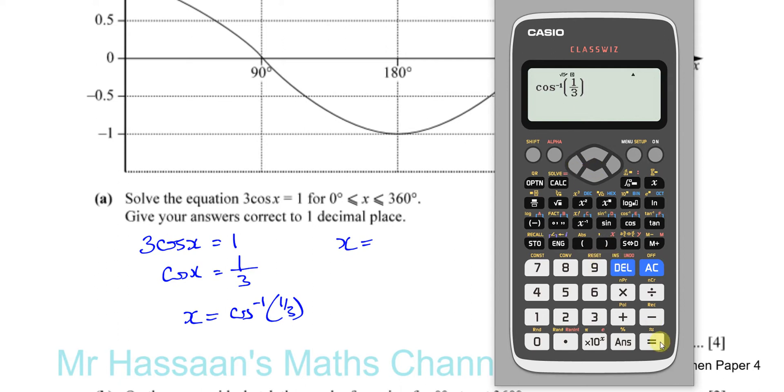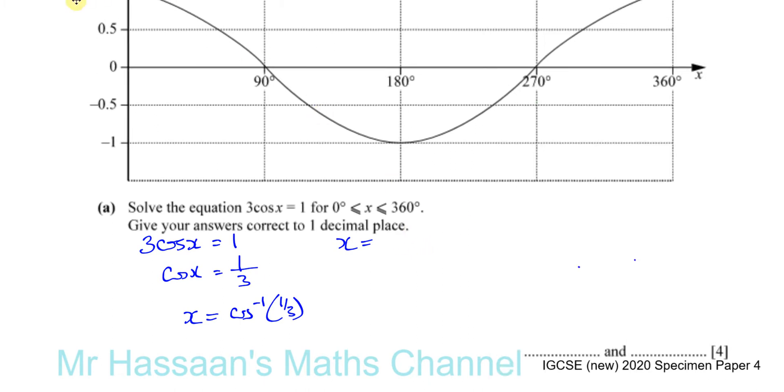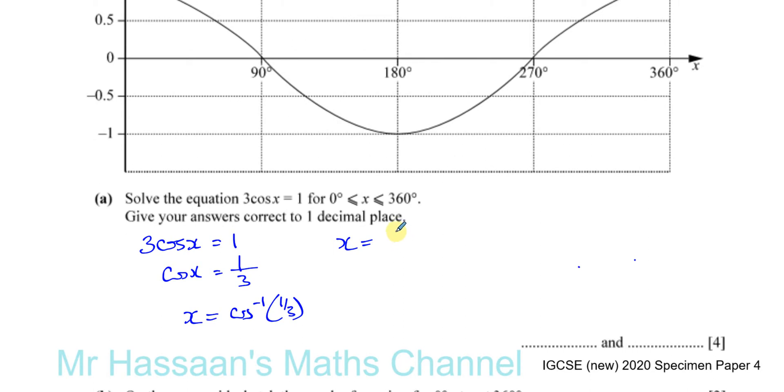Now it's in degree mode. I press inverse cosine of one third, and that will give me the angle in degrees. I should have really closed that bracket, but there we have the answer. I'm going to write it to more than one decimal place and round at the end. So I'll write this as 70.52 degrees.